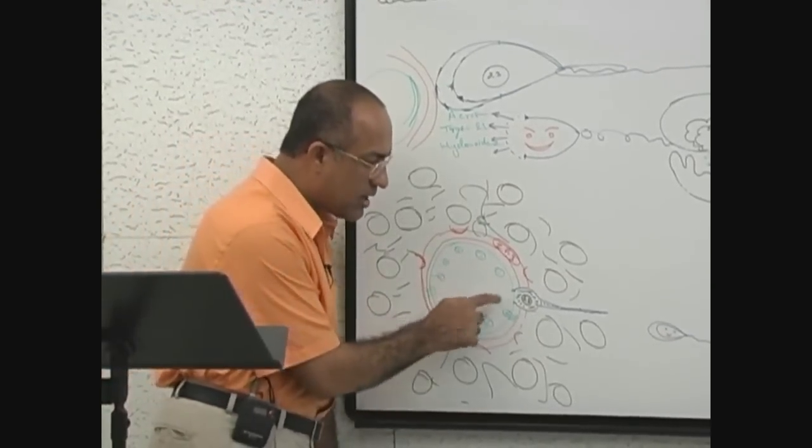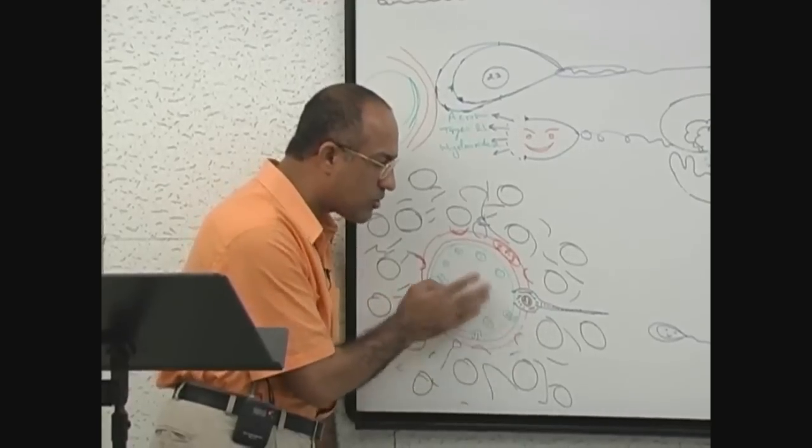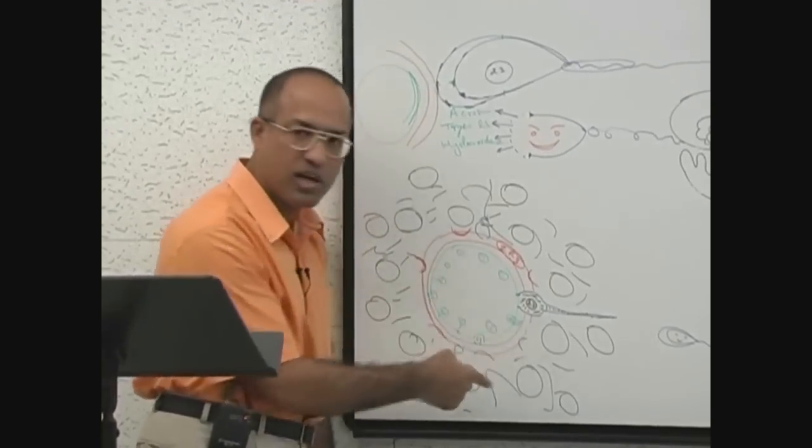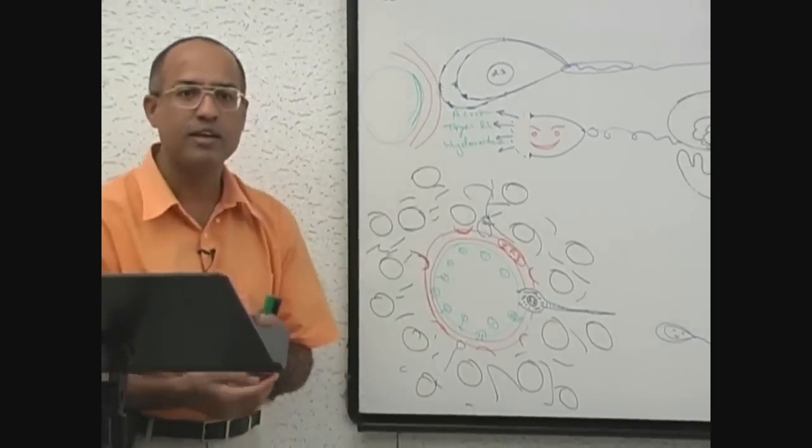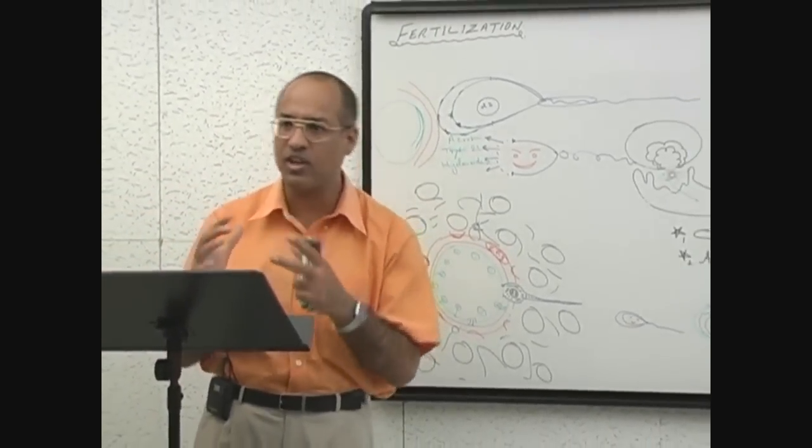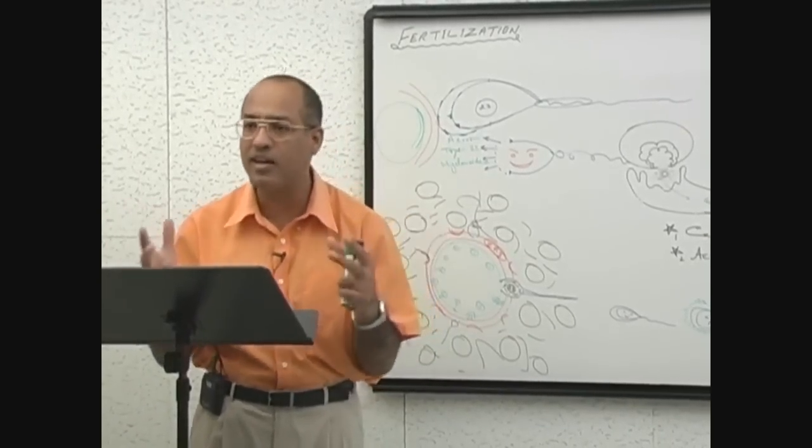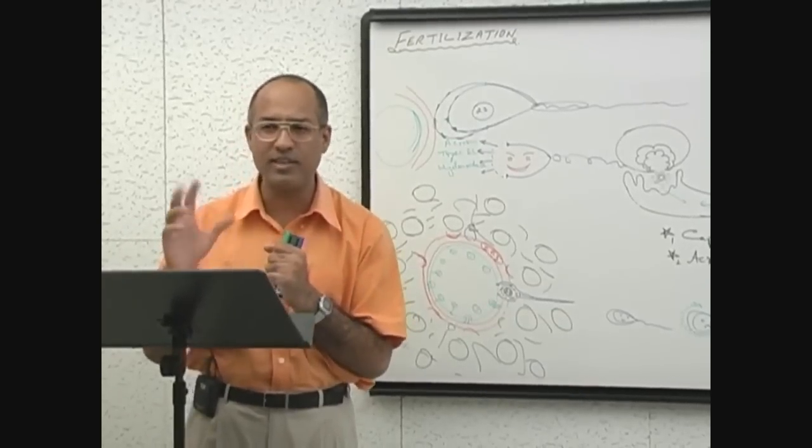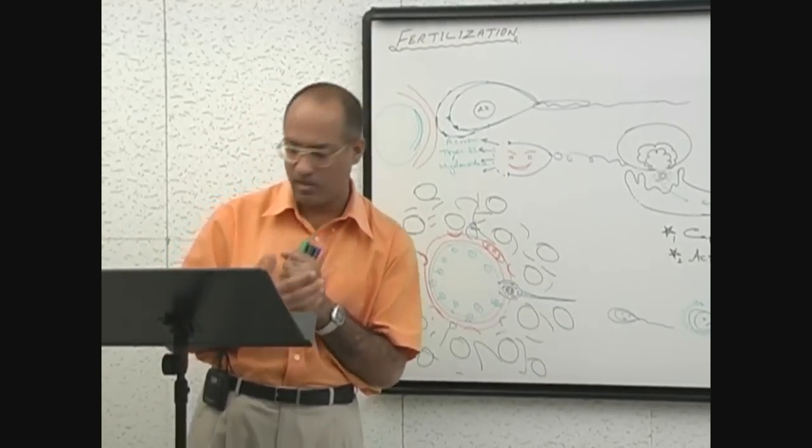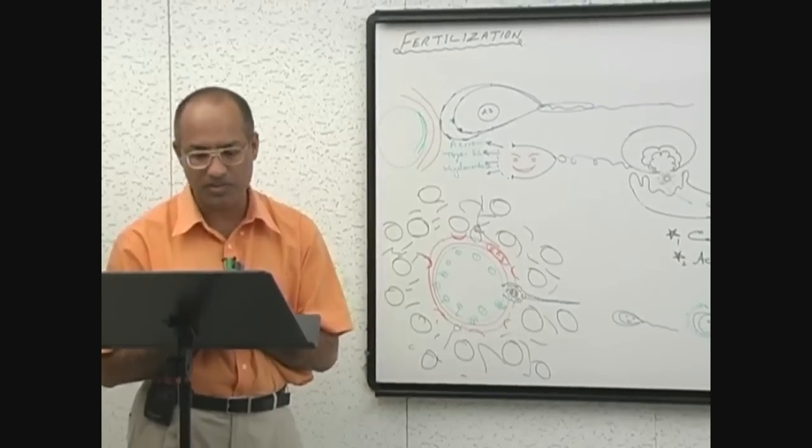As soon as the sperm membrane touches, cortical reaction occurs, lysosomal enzymes come out into zona pellucida, and then zona reaction occurs. The zona pellucida becomes impermeable—it undergoes structural and functional changes and becomes impermeable to remaining other sperm, and especially it inactivates its species-specific receptor sites.